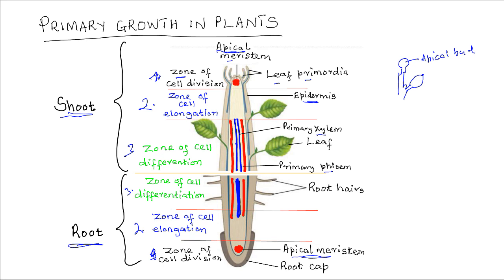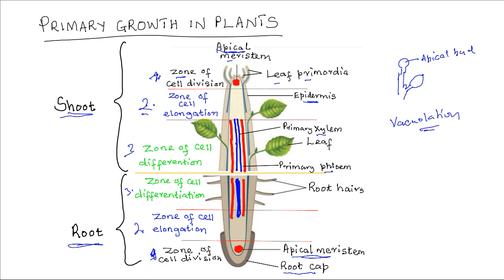In the root, the apical meristem is covered by the root cap, which provides protection for the apical meristem. In the zone of cell elongation, located just behind the zone of cell division, the cells increase in size through the formation of vacuoles in a process known as vacuolation. Through vacuolation, cells elongate, and this process occurs at the zone of elongation.